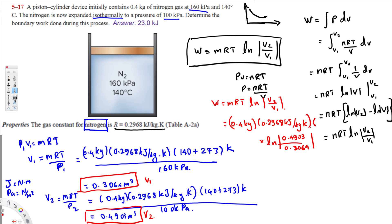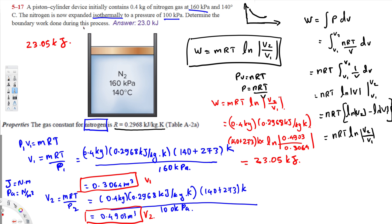Don't forget the temperature — we must always convert degrees Celsius to Kelvin when using ideal gas laws, so 140 + 273 = 413 K. Calculating this gives a final answer of 23.05 kilojoules. The units work out to kilojoules since kilograms and kelvins cancel. That's the answer — 23.05 kJ.